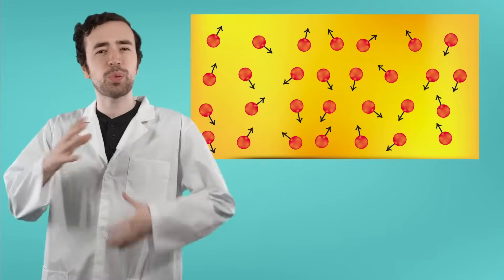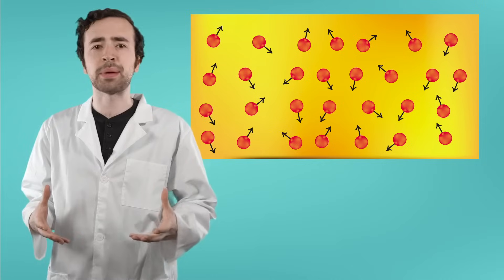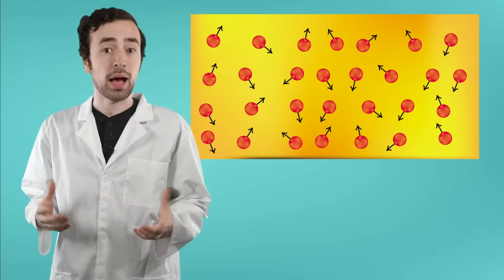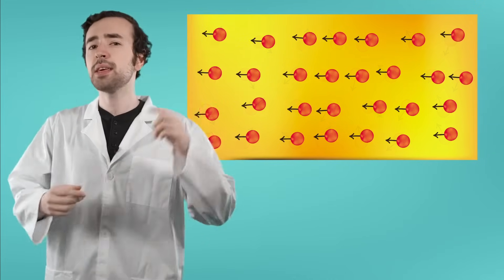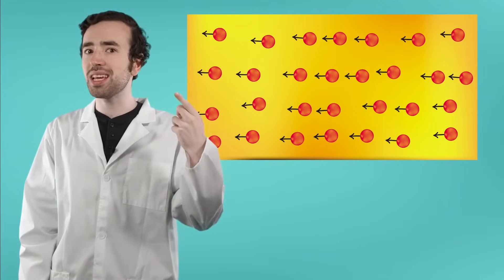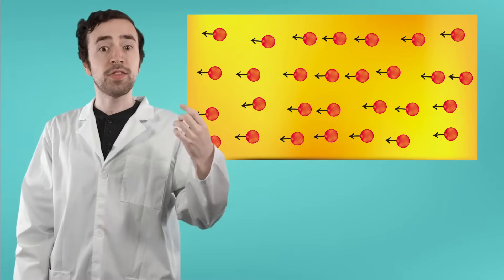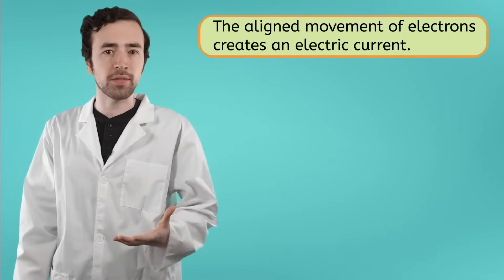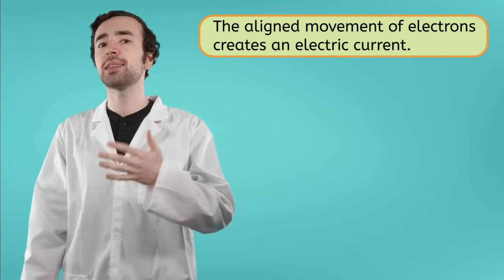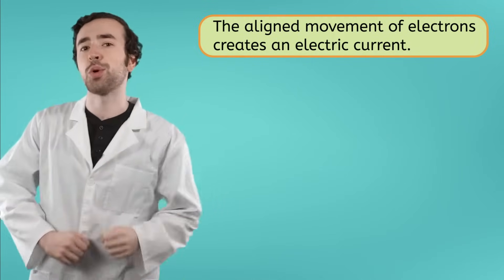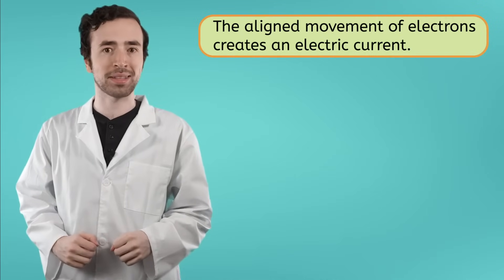In most materials, these electrons are spinning around the outside of the atom in all different directions. However, in magnets, the electrons are all spinning in the same direction. This aligned spinning of the electrons creates an electric current, and that's what causes the force of magnetism.